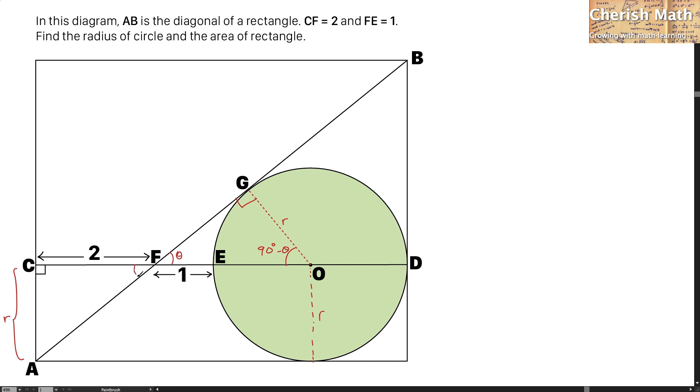And according to the triangle of FCA, since this part I labeled theta, it is going to be theta here because of the opposite angle. And for this part it's going to be 90 degrees minus theta because of the supplementary angle.